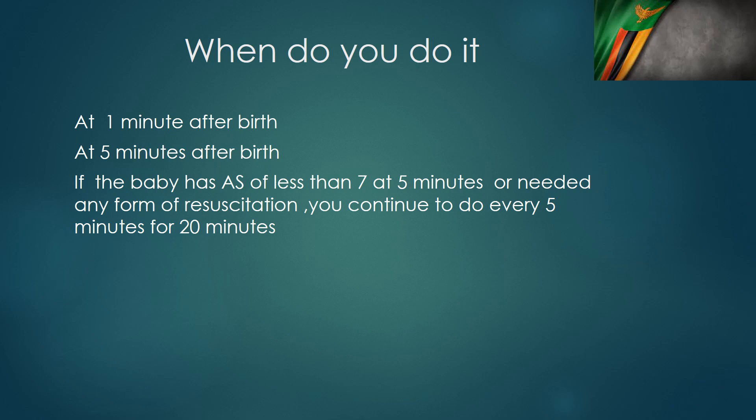So when do you do the APGAR score? You can do it at one minute — that's when the golden minute has passed. The baby has been born, you dry it, warm it, dress it up, and so on. Then at one minute you do your APGAR score. At one minute you are trying to measure how the baby was faring during labor, because labor is a stressful period. If the baby is struggling at one minute, you can think that the labor had a lot of stress on that baby.